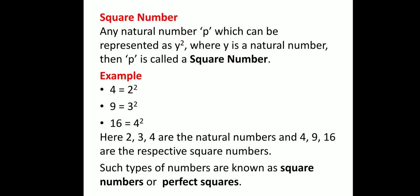Coming to square numbers. Any natural number p, which can be represented as y squared, where y is a natural number, then p is called a square number. For example, 2 squared is equal to 4, 3 squared is equal to 9. Alternatively, 4 is equal to 2 squared, 9 is equal to 3 squared, 16 is equal to 4 squared. So here, 2, 3, and 4 are the natural numbers and 4, 9, 16 are the respective square numbers. Such types of numbers are known as square numbers or perfect squares.